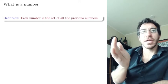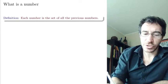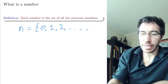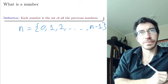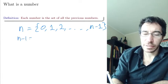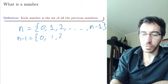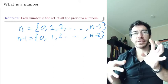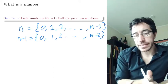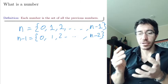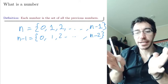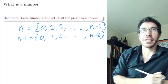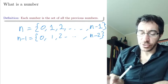Here is the more formal definition. Each number is going to be the set of all the previous ones. The number n is going to be the set {0, 1, 2, all the way up to n minus 1}, where n minus 1 is the set {0, 1, 2, all the way to n minus 2}. One advantage of this approach is that the size of the number n — how many elements are in the set representing n — is exactly n. So the number n has n elements inside, which is going to be quite useful for the combinatorics.